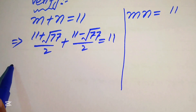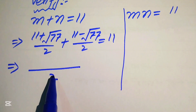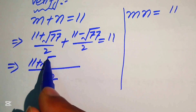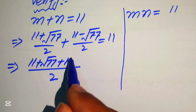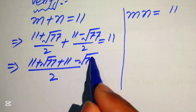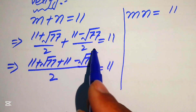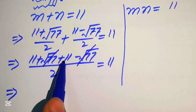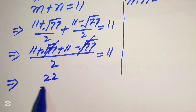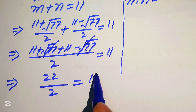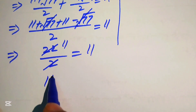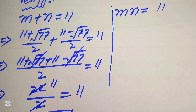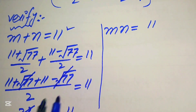Taking the LCM, the first equation becomes (11 plus square root of 77 plus 11 minus square root of 77) divided by 2 equals 11. The square root terms cancel, giving 22 divided by 2 equals 11, so 11 equals 11. This confirms the values of m and n satisfy the first equation.